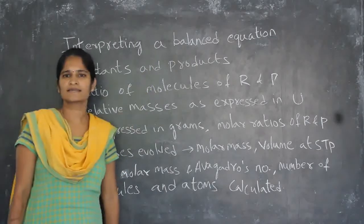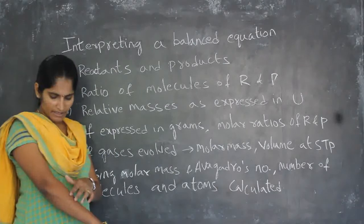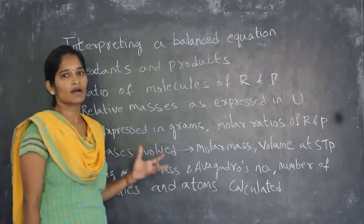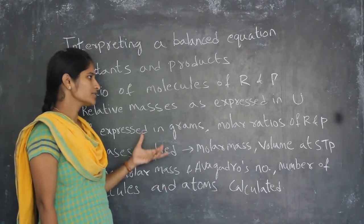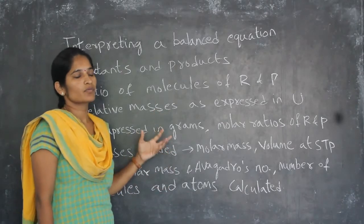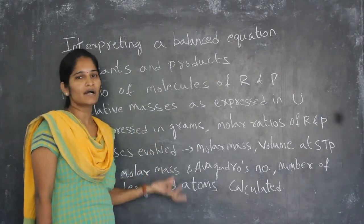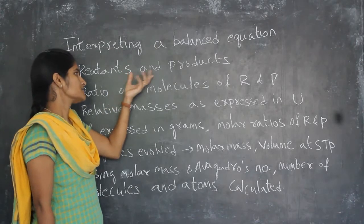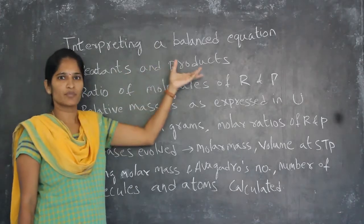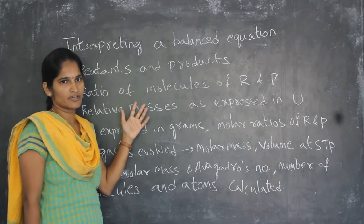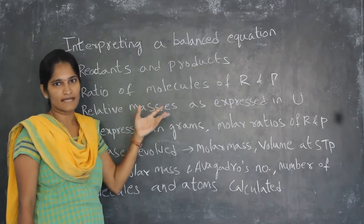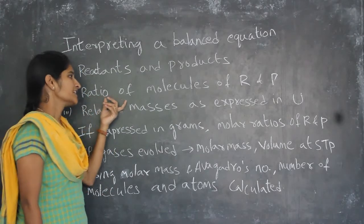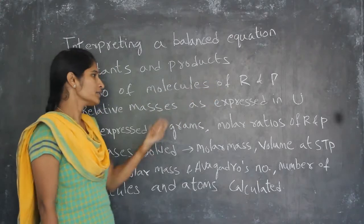We will interpret a balanced equation. Interpreting a balanced equation means what information we can get from it. So we will mainly get details about the reactants and products. By seeing the equation we can say what are reactants and what are products. We can also determine the ratio of molecules of reactants and products.